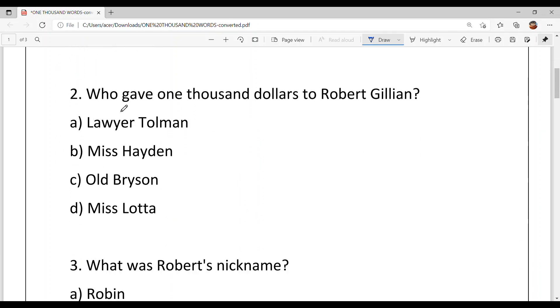Question number 2, who gave $1,000 to Robert Gillian? Now, if you understand this question, you can ask that Robert Gillian, $1,000. If it was $10,000, it would be his uncle. But if you ask $1,000. Option A, Lawyer Tolman. Option B, Miss Hayden. Option C,